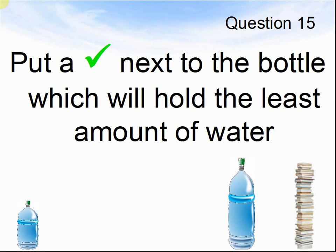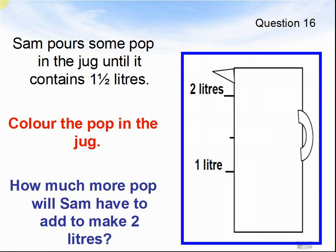Here comes question 16. Sam pours some pop into the jug until it contains one and a half litres. Colour the pop in the jug. How much more pop will Sam have to add to make two litres? Pause the video until you are ready to answer the question.